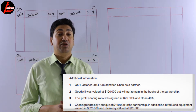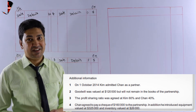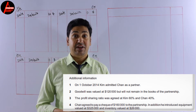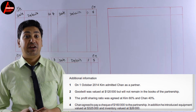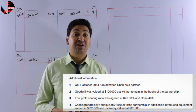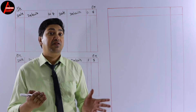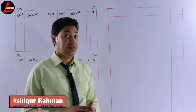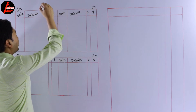There is some additional information. On 1 October 2014, Kim admitted Chen as a partner — so from 1 October, Chen will be the other owner of the business. Adjustment number two states that goodwill was valued at 120,000 but will not remain in the books of the partnership. So here you need to prepare the capital accounts for both partners.